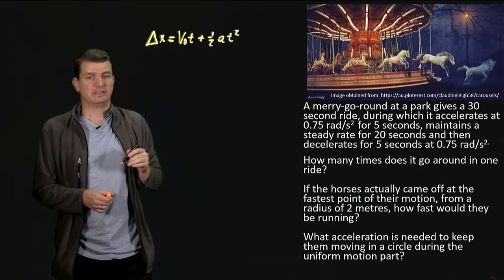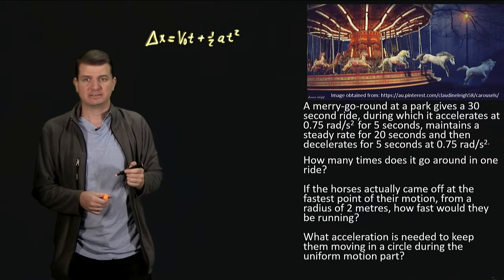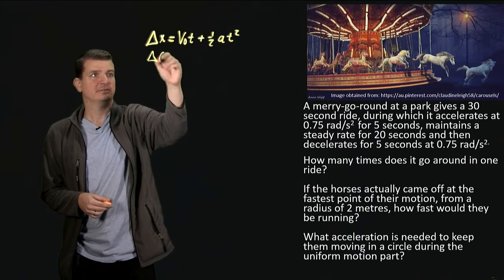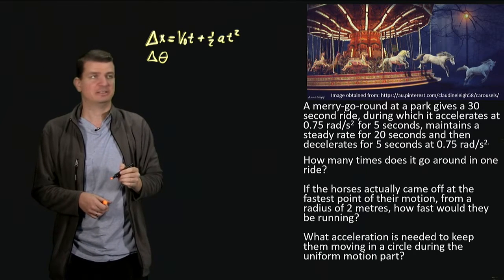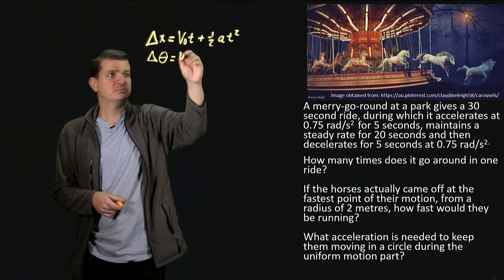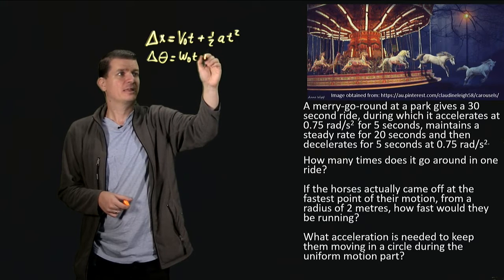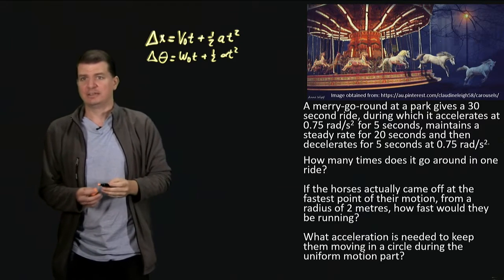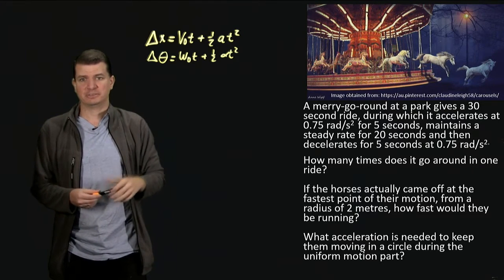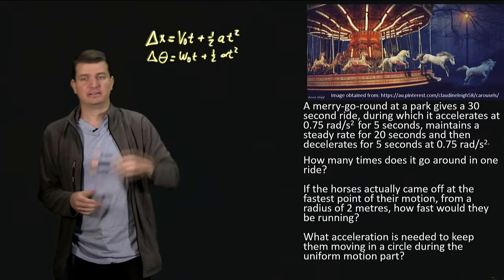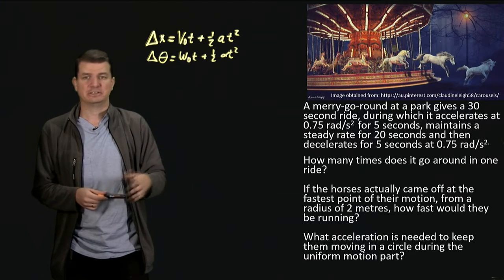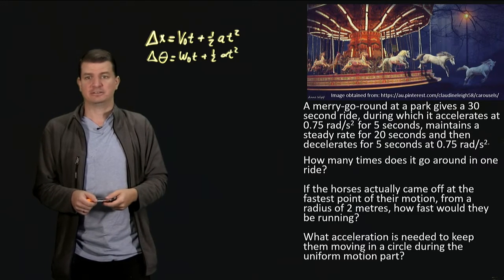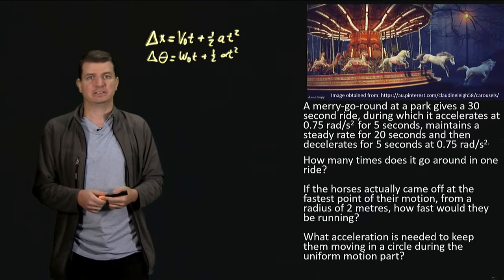So how do we apply that here? The secret is: x becomes theta — that's our angular displacement. V becomes omega, our angular velocity. And a becomes alpha, our angular acceleration. Those are all the angular equivalents of the linear kinematics variables: theta is our angular position, delta theta is our angular displacement, omega is our angular velocity, and alpha is our angular acceleration.